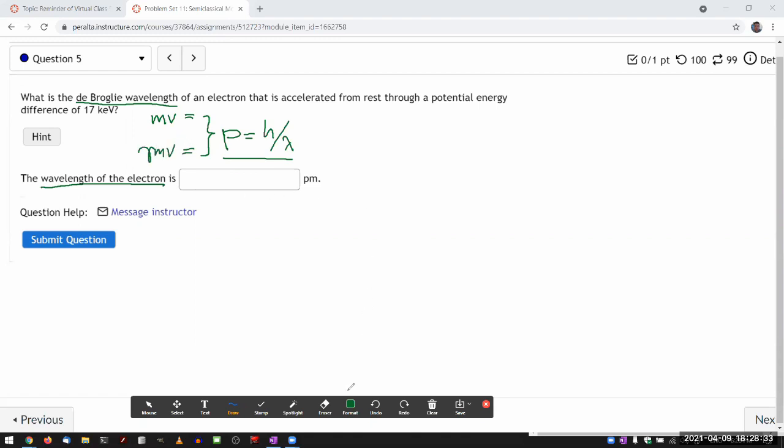And most of the time, I'm going to try to look for a way to justify using the non-relativistic expression. And here's one way to justify it. So I'm seeing that electron is being accelerated through a potential energy difference of 17 kiloelectron volts, which means it's going to have kinetic energy of 17 kiloelectron volts.